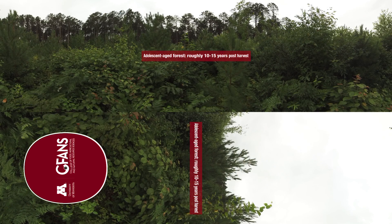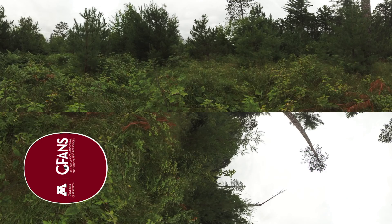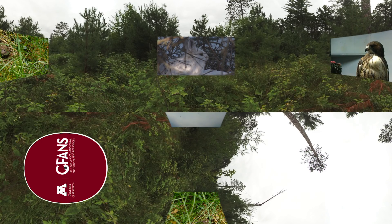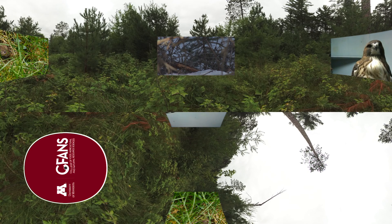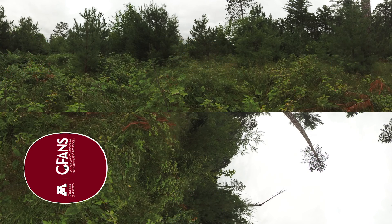Just a few years later you can already see the forest transforming into its adolescent stage of forest development and structure. These young stands provide tree canopy structure and habitat beneficial for small mammals such as hares, mice and voles, raptors like red-tailed hawks, and songbirds such as the golden-winged warbler.